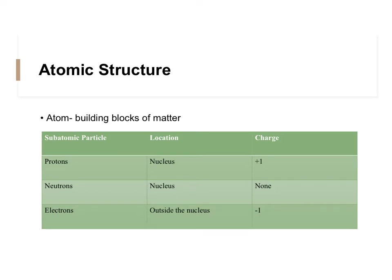Our first subatomic particle is the proton. Protons are located in the nucleus, or in the middle of the atom, and protons have a charge of plus one. One way to remember protons: protons start with a P — think positive. So they have a positive charge.